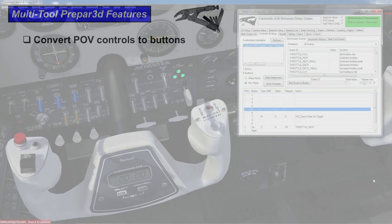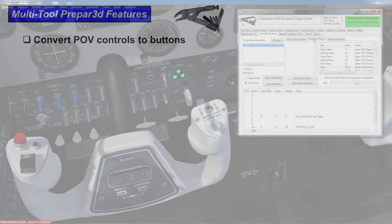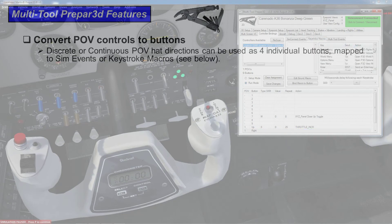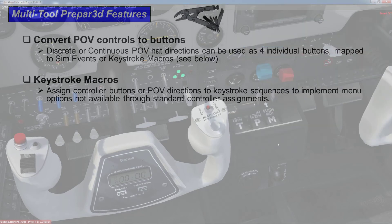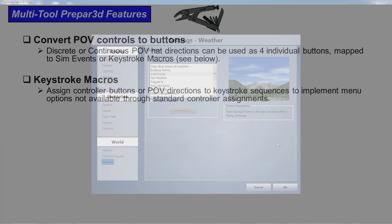You can convert a POV button, like a 4-direction POV, and assign those events to either sim events or to keystroke macros. There are keystroke macro sequences like Alt+V for views, or any of the menu combinations. Anything you can do with keys through the menu you can turn into a macro, which you can assign to buttons.